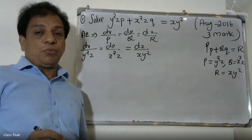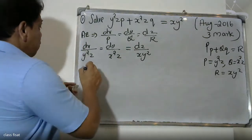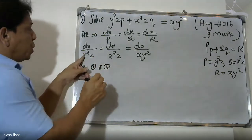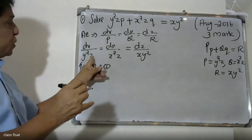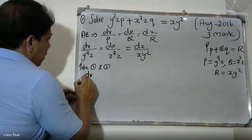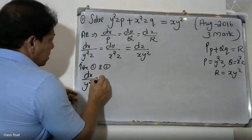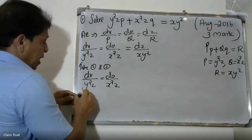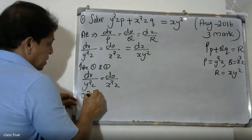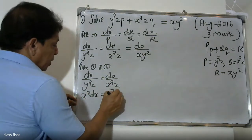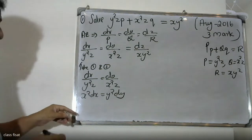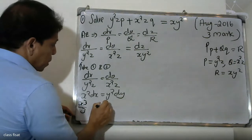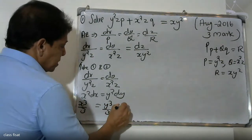Group method: take the first ratio and second ratio. dx divided by y-squared equals dy divided by x-squared. Cross-multiplying: x-squared dx equals y-squared dy. We integrate: x-squared by three equals y-squared by three, plus C1.